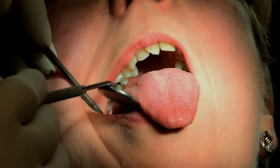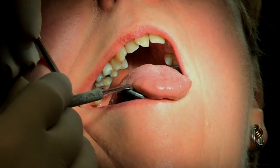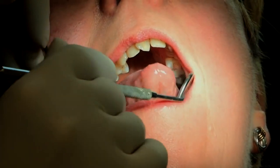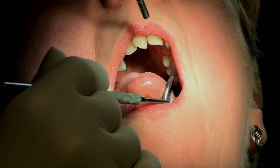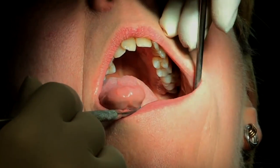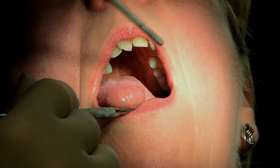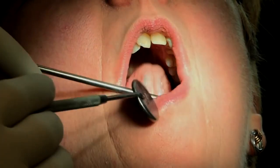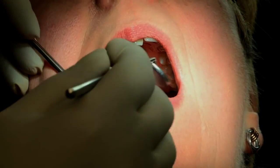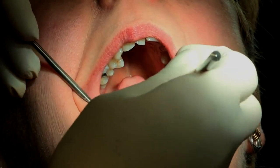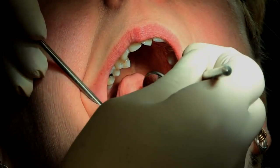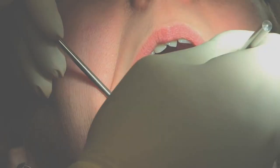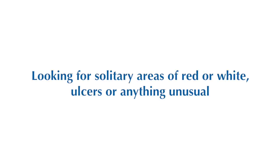Stick your tongue out. On the right, the posterior floor, lateral border, dorsum, left floor, border look okay. And lift your tongue up. The anterior floor, the ventral surface of the tongue and the lingual frenum all look normal.